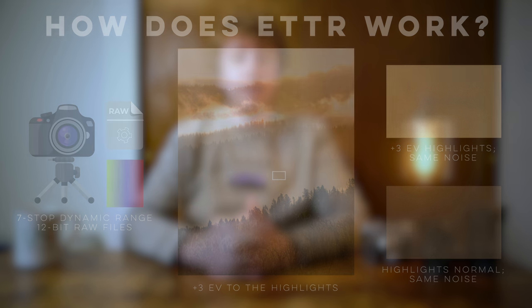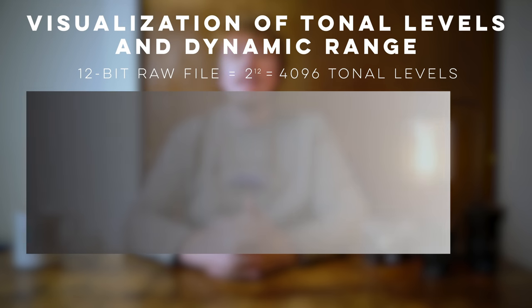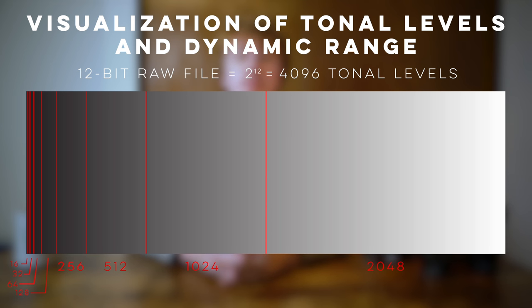By representing the seven stops of our camera's dynamic range as tonal sections, and our entire tonal range partitioned by the available tonal levels, we can see what's going on. Because f-stops are naturally logarithmic, each stop records half the light of the previous one. Since we have 12-bit raw files, our camera is capable of recording 4096 total levels. This means the brightest stop takes 2048 of those levels, the second 1024, the third 512, and so on.